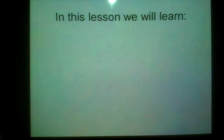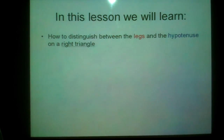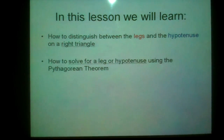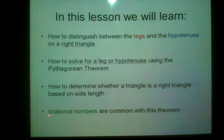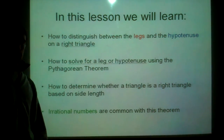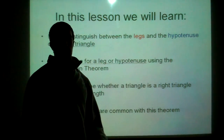In this lesson, here are the things we're going to learn. We're going to focus on how to distinguish between the legs and the hypotenuse on a right triangle, how to solve for a leg or hypotenuse using the Pythagorean theorem, how to determine whether a triangle is a right triangle based on side lengths, and lastly how irrational numbers are common with this theorem — the square roots we can't simplify neatly.